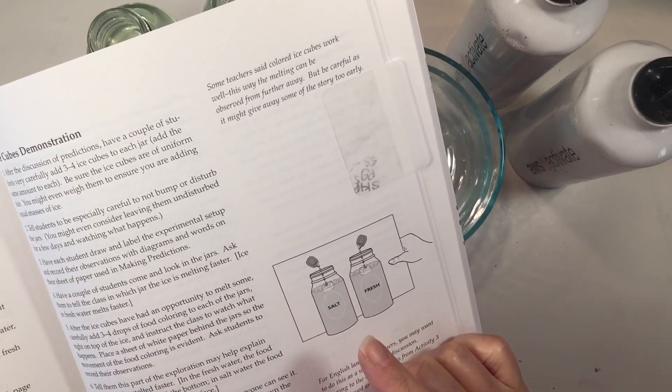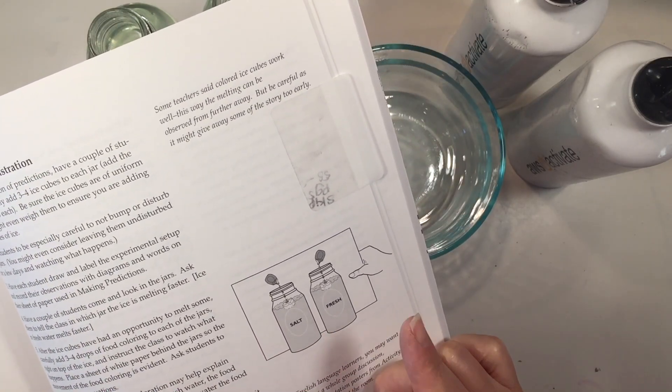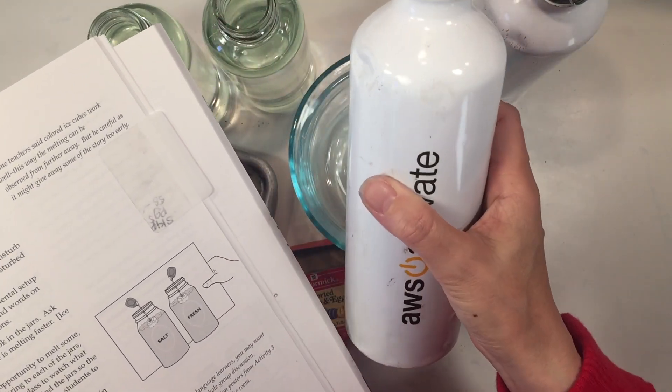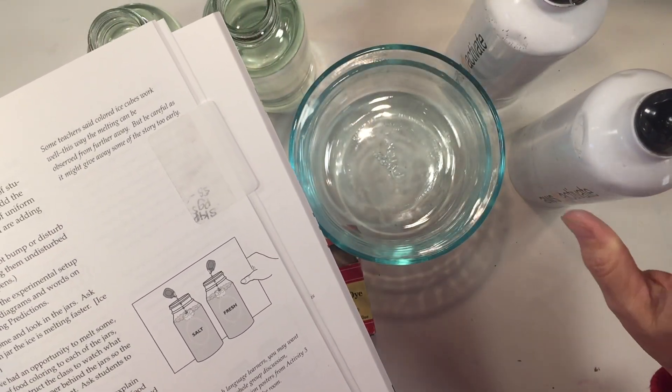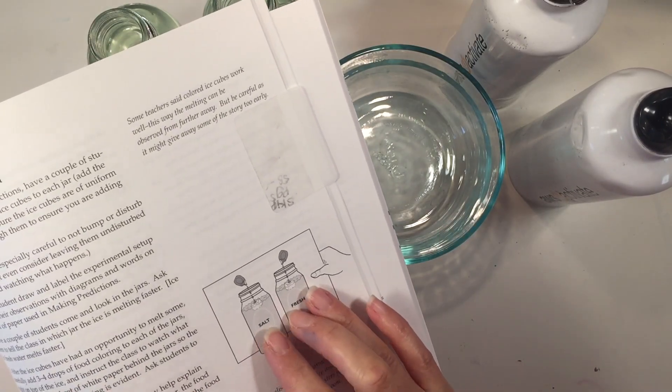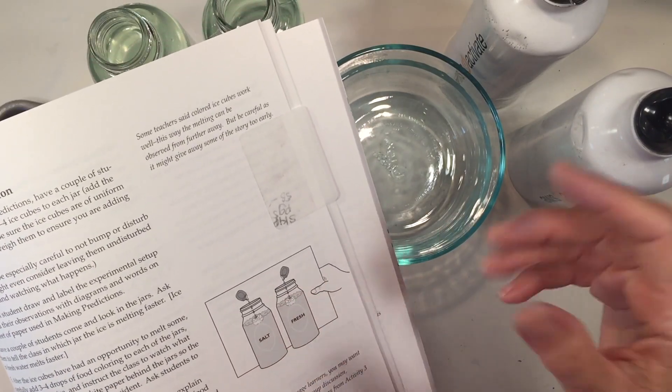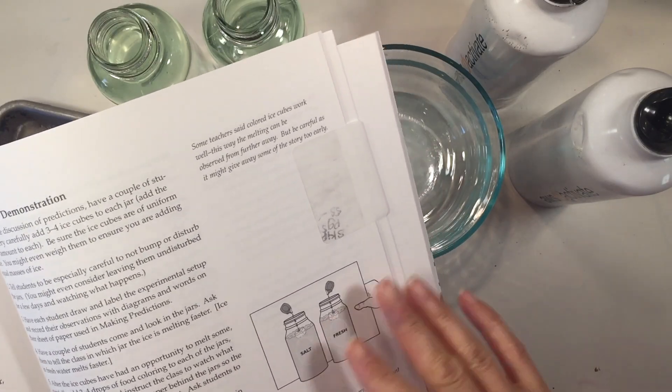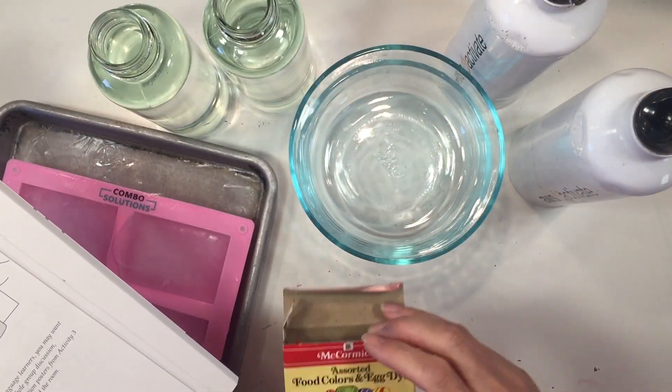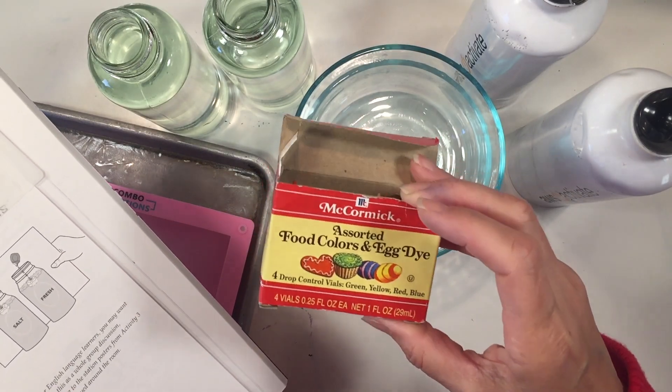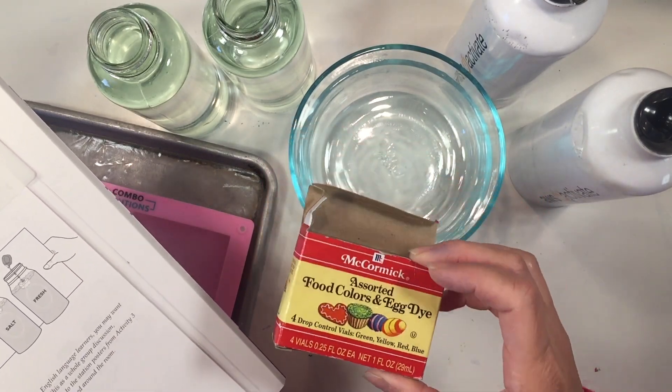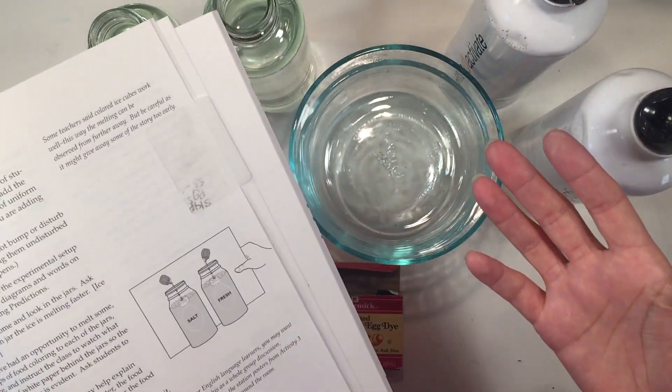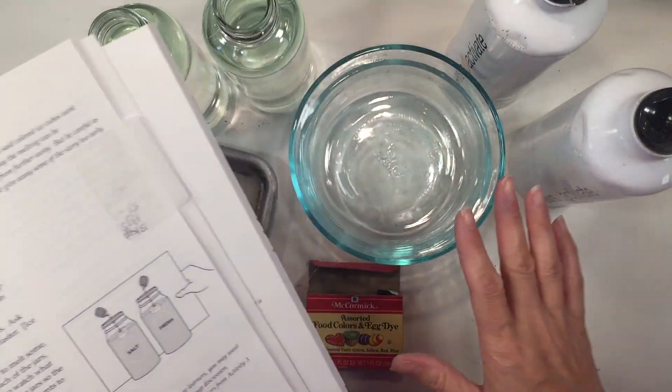For this project you need fresh water and salt water. You can make your own salt water, but we were at the beach recently and got some ocean water, so we're going to be using ocean water for this experiment. You also need two ice cubes of the same size. We're gonna see which one melts faster in fresh water or salt water. This project recommends some food coloring to put on top of the ice cube so that you can see better which one is melting faster and how the ice disperses in the water.